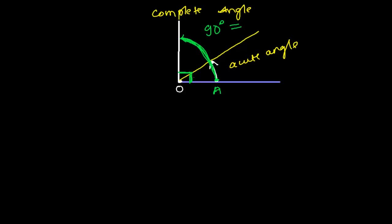This 90-degree angle is known as a right angle. Sometimes we also symbolize this 90 degrees like this — perpendicular. Sometimes people say orthogonal as well. There are many words for it. This exact 90-degree angle is known as the right angle.